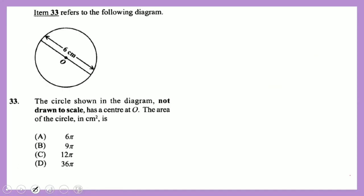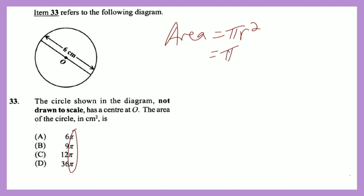Question 33: the circle has a center at O. The area of the circle in square meters is pi times radius squared. Since pi remains in the answer choices, we leave it as pi. The diameter is 6, so the radius is 3. Three squared is 9, giving an area of 9π. The answer is B.